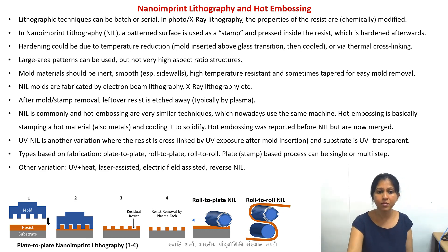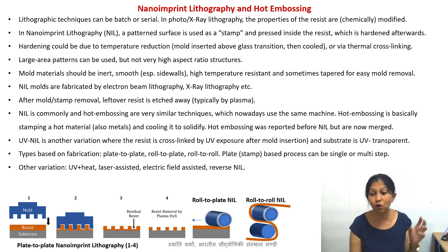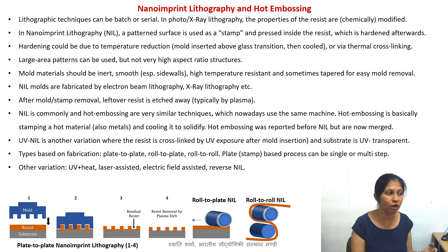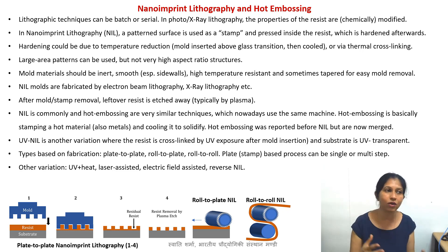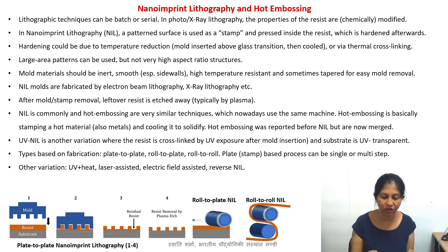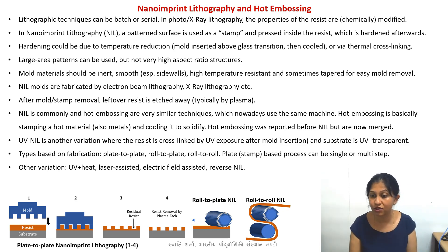Other variations of nano imprint lithography include using both UV light and heat simultaneously, laser-assisted imprinting, electric field-assisted nano imprint lithography, and reverse nano imprint lithography. The basic concept can be extended with many parameter variations to create customized versions of the technique.